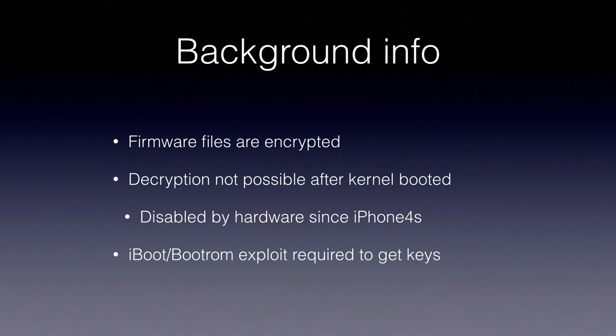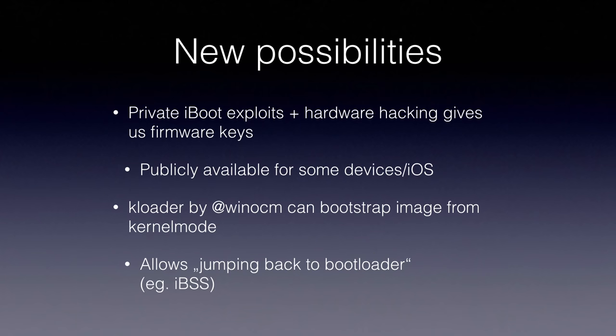What about newer devices where we don't have LimeRain? Firmware files are encrypted, and decryption is not possible once the kernel has booted — this is disabled by hardware since the iPhone 4S. Before the 4S you could decrypt with the AES engine on the phone, but since then it's disabled by hardware once the kernel has booted. To get the keys you need either an iBoot or boot ROM exploit. Luckily in the jailbreak community, some people have private iBoot exploits and private hardware hacking techniques, and they share the firmware keys on the iPhone Wiki.